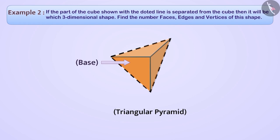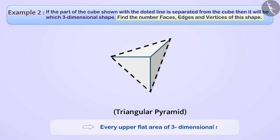Let us know how many faces, sides and vertices are there in this triangular pyramid. You must remember that every upper flat area of a three-dimensional shape is called a face. As you can see, this figure has a total of four faces. This first, this second, this third and this fourth.